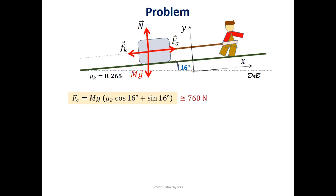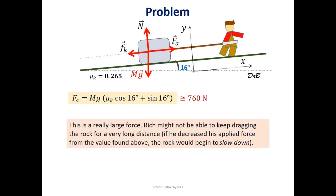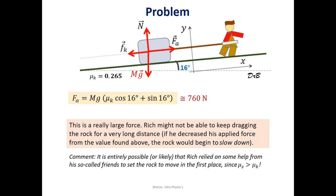So, there's two comments that I have here. This is a really large force, which means Rich might not be able to keep applying this same force for a very long distance. The moment he decreased his applied force, the rock would begin to slow down, so if this applied force was any less than 760 newtons, you would observe the rock to slow down, eventually coming to a halt.